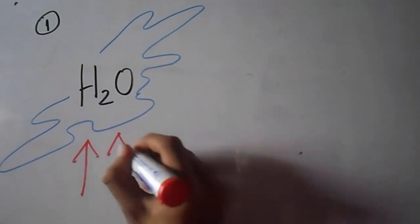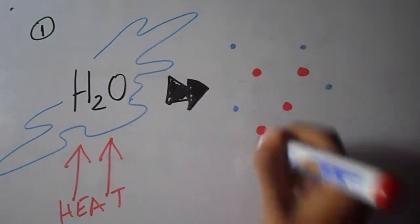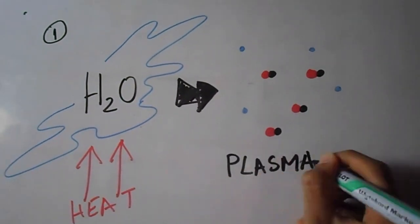For example, turning water into plasma would take about 11,800 degrees Celsius of heat, which is really, really hard.